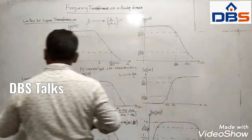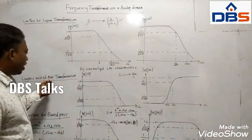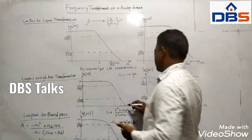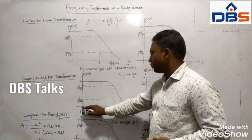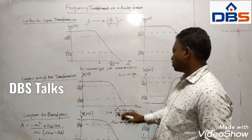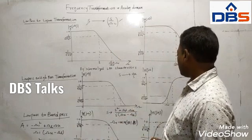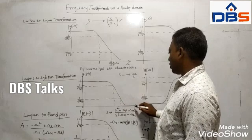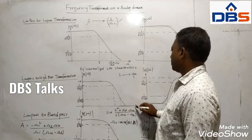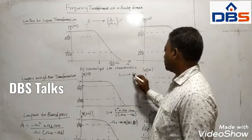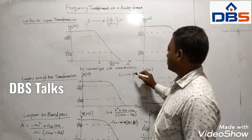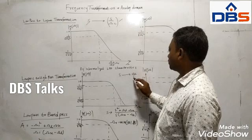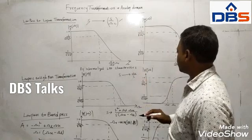Now coming to the second one: low-pass filter to high-pass filter transformation. The given filter is a low-pass filter — we have maximum magnitude from 0 up to a particular frequency, and above that is the stopband. Now, wherever s is there, you substitute the inverse of this, that is omega_c divided by s. In place of s, you substitute omega_c divided by s. Then you will get the high-pass filter characteristics.